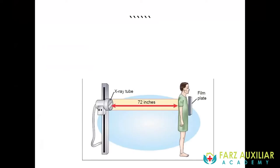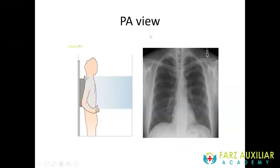Good evening everyone. My topic today is approach to chest radiograph, and I'm going to stick to the very basics. I want to start with how a chest radiograph is taken. There is an x-ray tube and x-rays are emitted from the tube. The patient stands with the film in front of the chest, and the x-rays traverse from posterior to anterior — that is how we get the PA view, which is the commonest view.